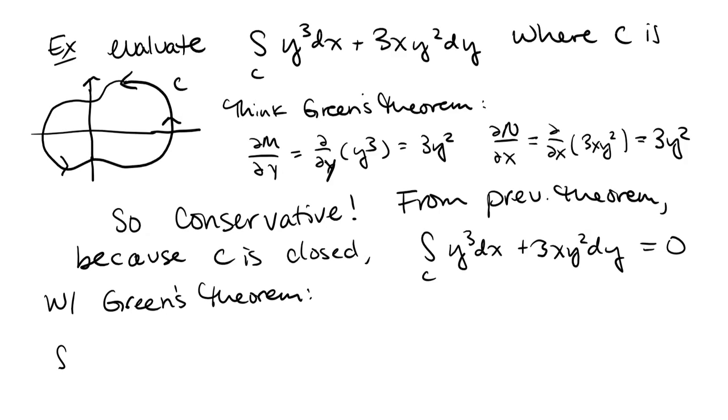In Green's theorem, we would switch from the line integral of y³dx plus 3xy²dy to the double integral over R of the partial of N with respect to x minus the partial of M with respect to y with respect to area. Now let's put those partials in. The partial of N with respect to x was 3y², and the partial of M with respect to y was also 3y².